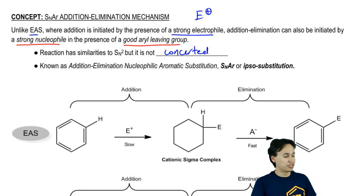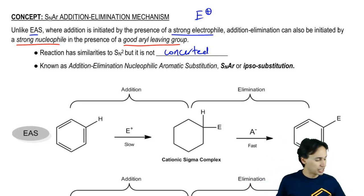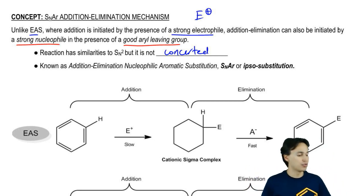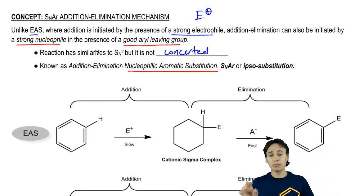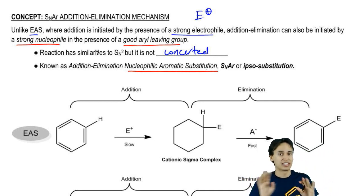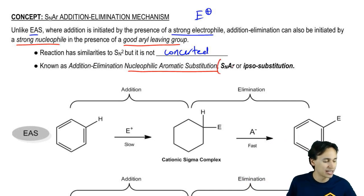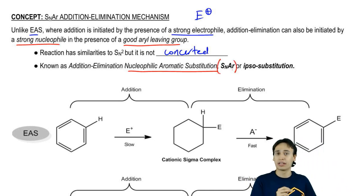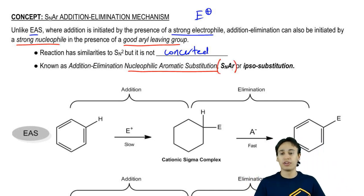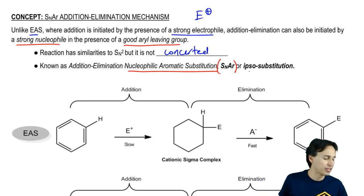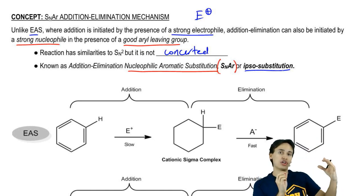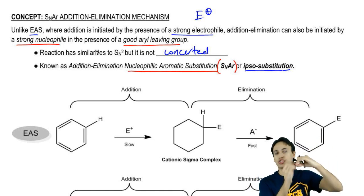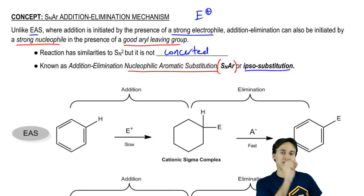This reaction is called many different things. Instead of EAS, it's known as nucleophilic aromatic substitution, and it is not abbreviated NAS — don't call it that, that's something different. It's called SNAr. Also, in some texts, it's even called the ipso substitution, which refers to the fact that you have two groups sharing a carbon for a little bit in the intermediate.